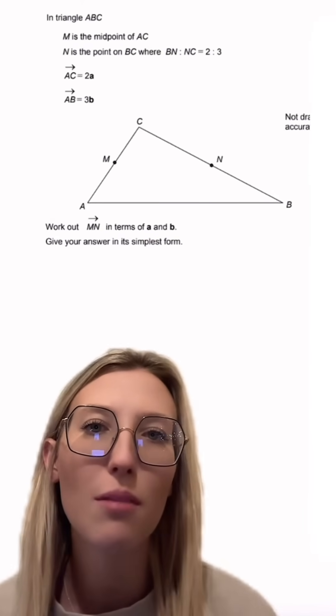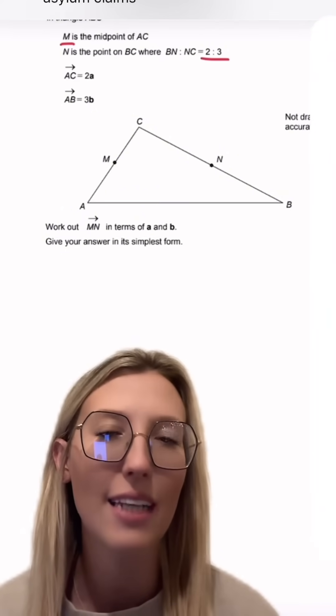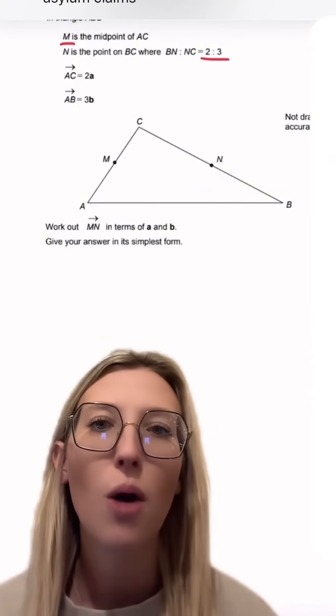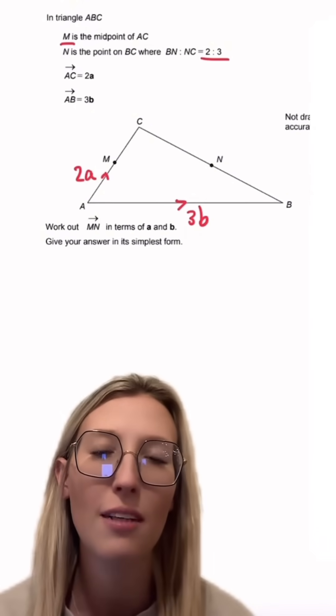In this question we've got triangle ABC. We're told M is the midpoint of AC and N is a point on the line BC where BN to NC is 2 to 3. We're also told that AC is 2a and AB is 3b. We want to find the vector MN. So let's go ahead and draw this in.